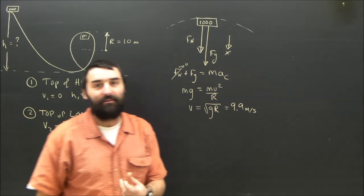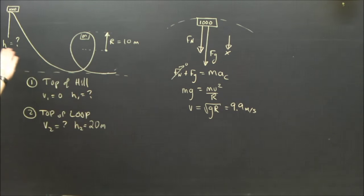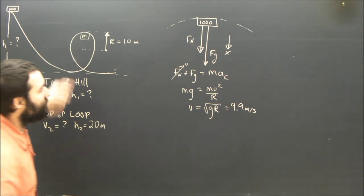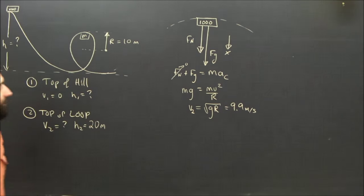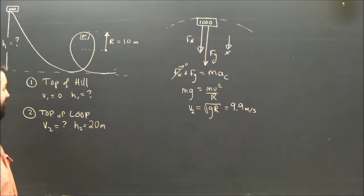So the roller coaster has to have a speed of 9.9 meters per second. I've just called it v, but if I look back at the beginning of my problem, I'm saying the top of the loop is v2, so I'm going to call that v2 because that's what it is. It's the speed at the top of the loop—it has to be 9.9.